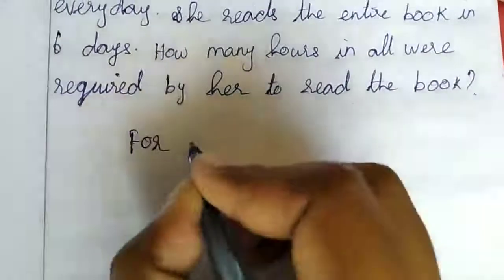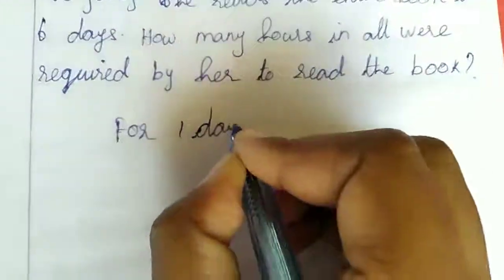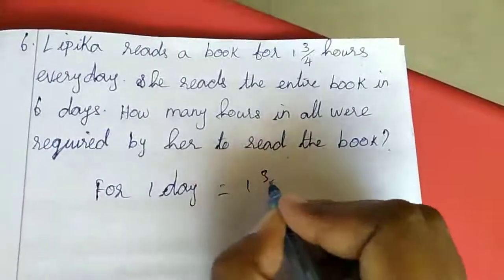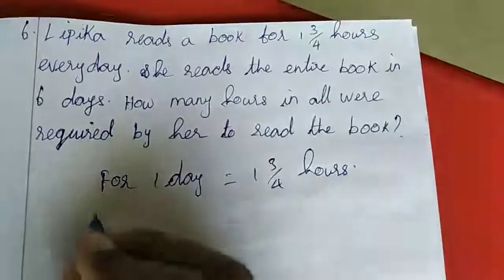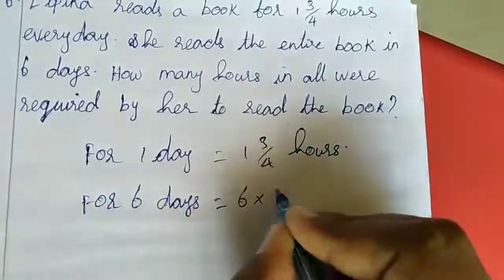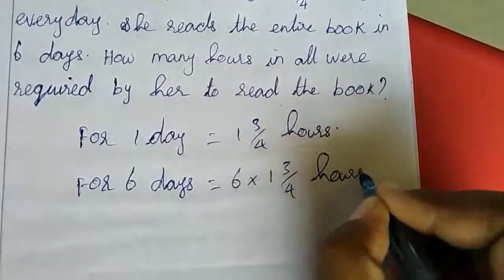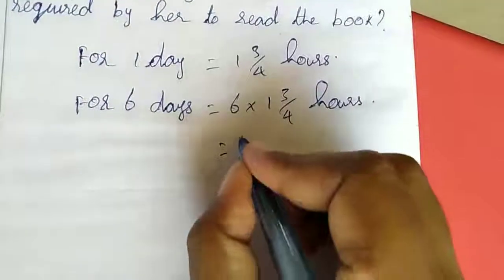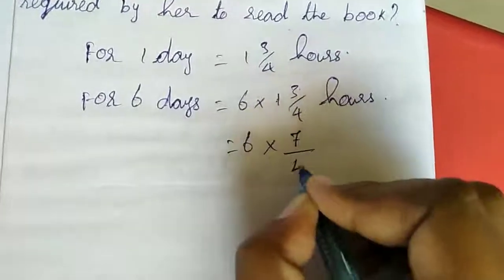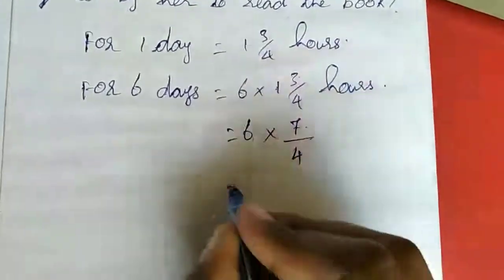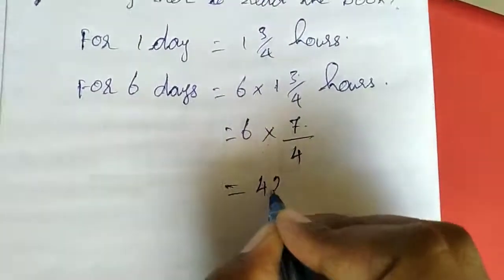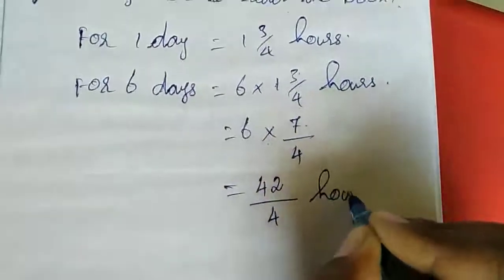For one day equals 1 3/4 hours. For six days equals 6 times 1 3/4 hours. Now I am going to multiply this. Convert to improper fraction: 4 times 1 is 4, plus 3 is 7, so 7/4. If you multiply 6 and 7, six sevens are 42. So 42/4 hours.